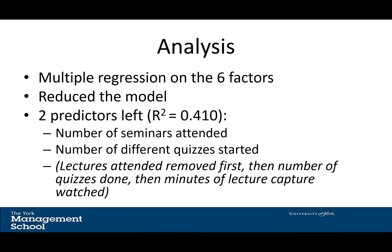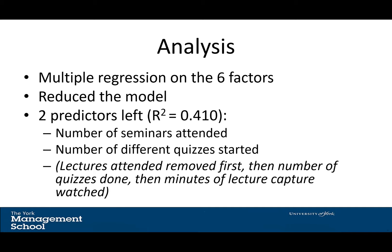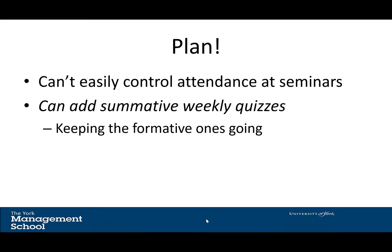When Jess did a correlation, she found that the main two predictors of success were attendance at seminars and number of different quizzes started and completed. Since she can't control seminar attendance, she can do something about quiz usage — so she's changed them from formative to summative weekly quizzes. It's a case of watch this space, because this is happening next term. We will be able to report back on how that curriculum design change has impacted success rates.